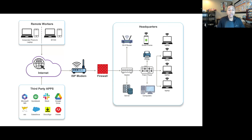The CMMC 2.0 proposed rule states that for a CMMC Level 1 self-assessment, there has to be a senior representative from the organization that will attest to compliance with those 15 security requirements for Level 1. That senior representative is going to be signing their name and submitting their self-attestation to the SPRS system. You don't want to make any fraudulent claims to the Department of Defense or the federal government. Having at least the basic documentation can help make your position defensible if your compliance with Level 1 is ever called into question — better safe than sorry.